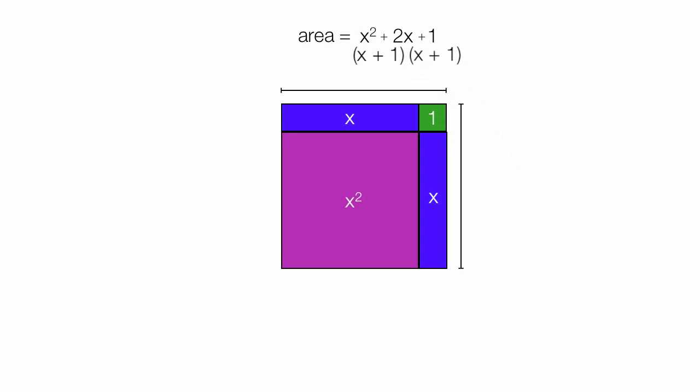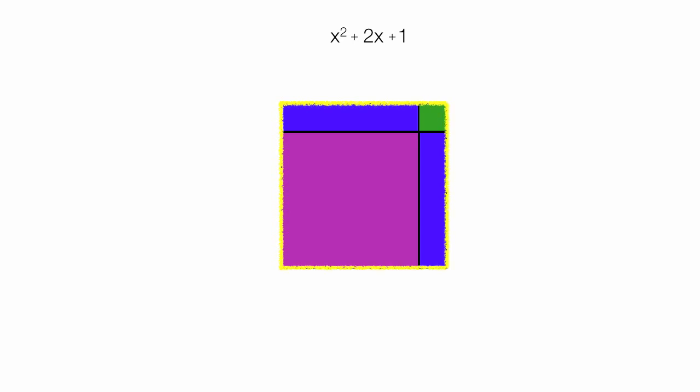So it turns out the factors are the sides of this four-sided shape. So this square, or rectangle, has four sides and factors very nicely. That means there is a solution.